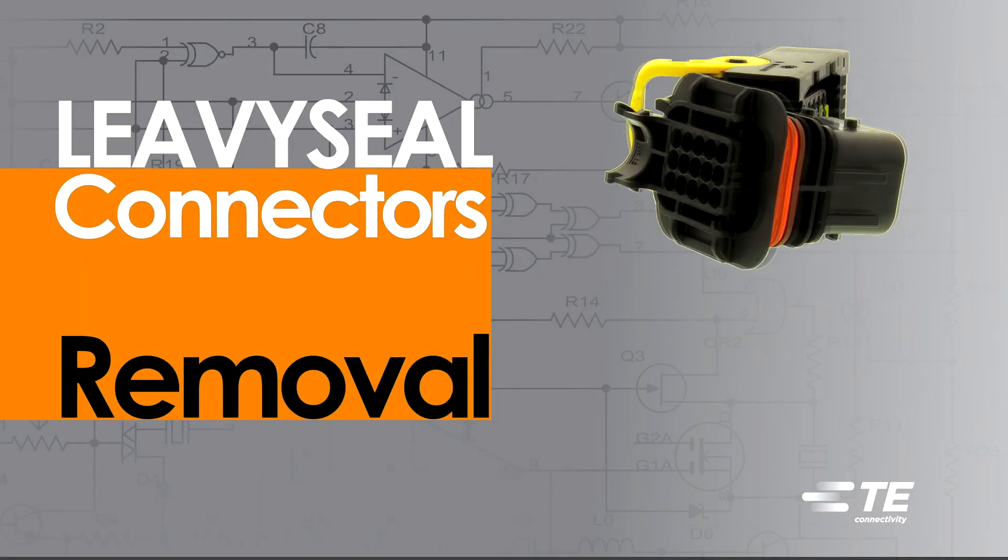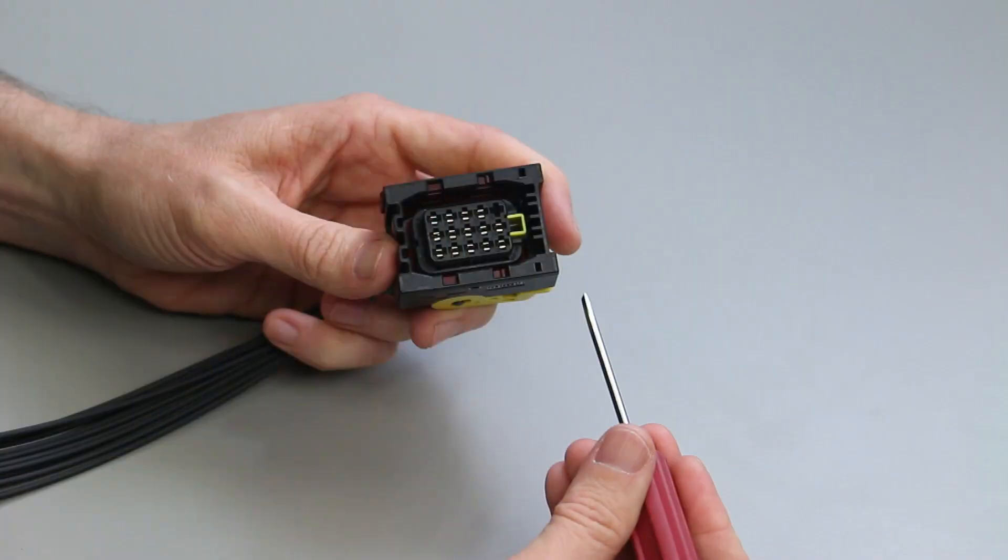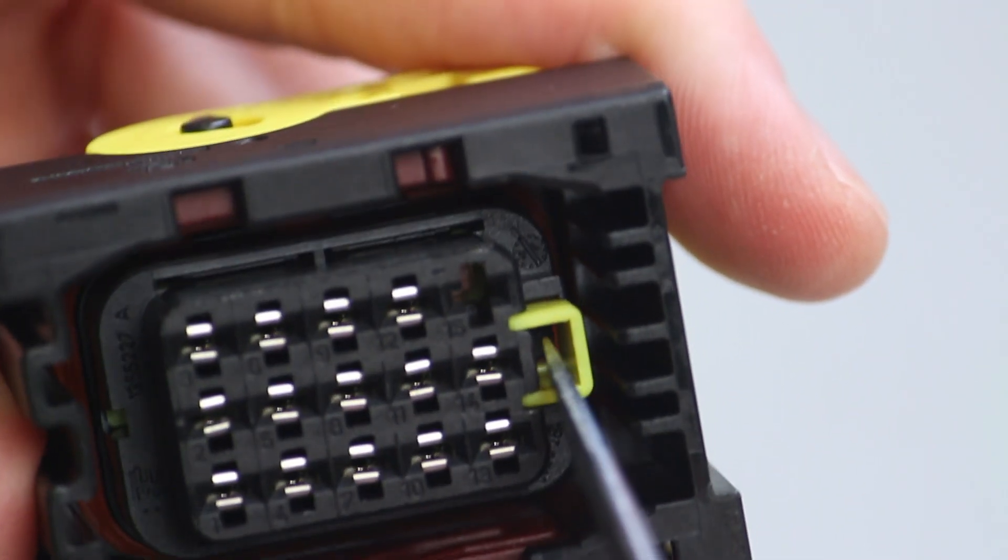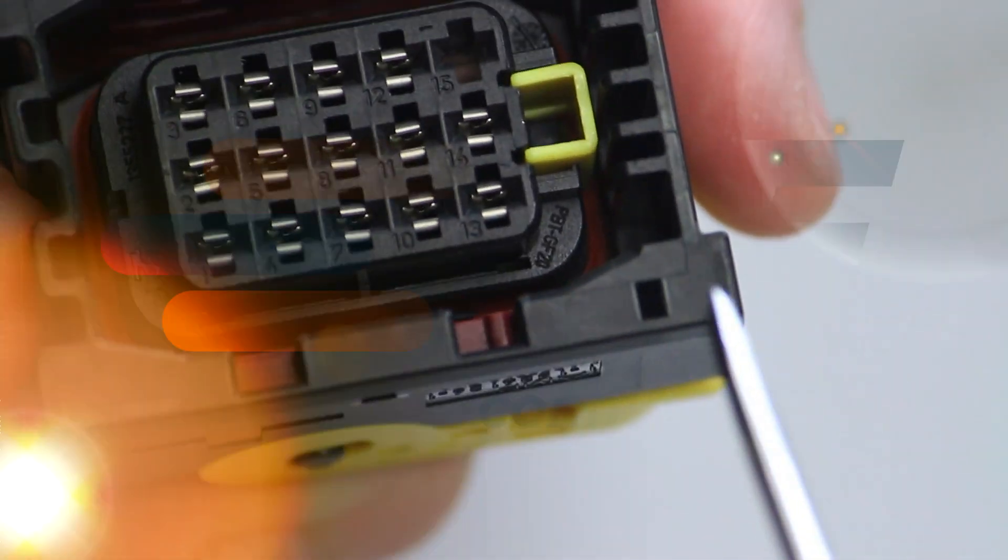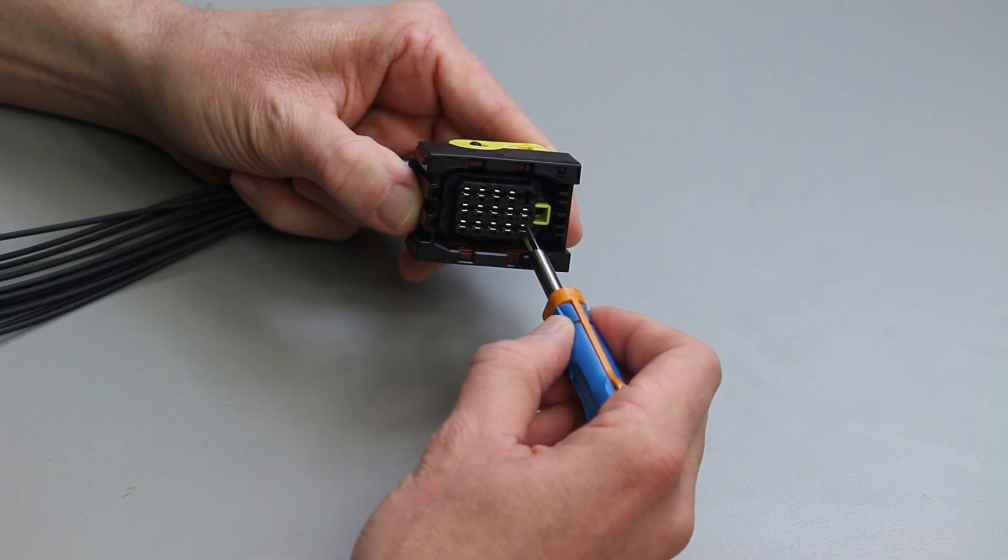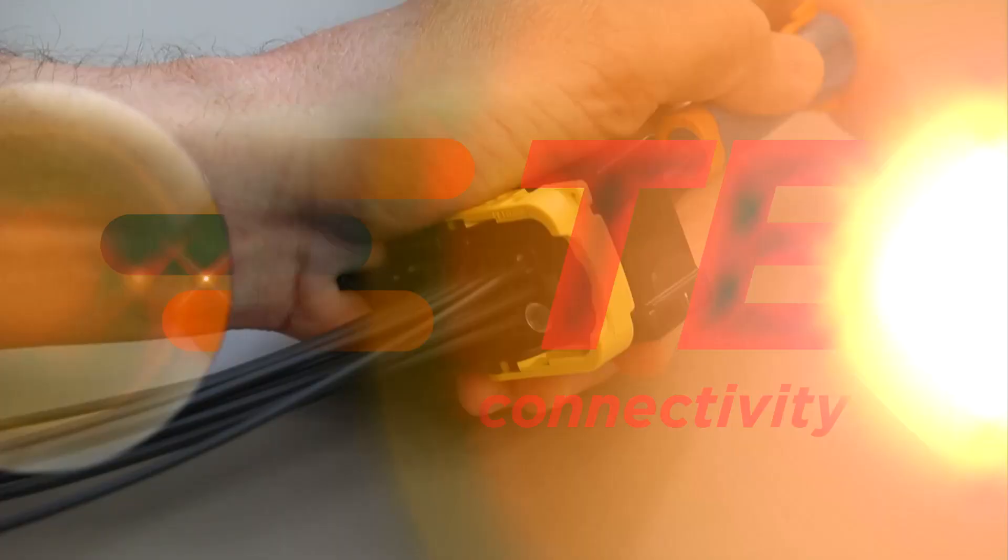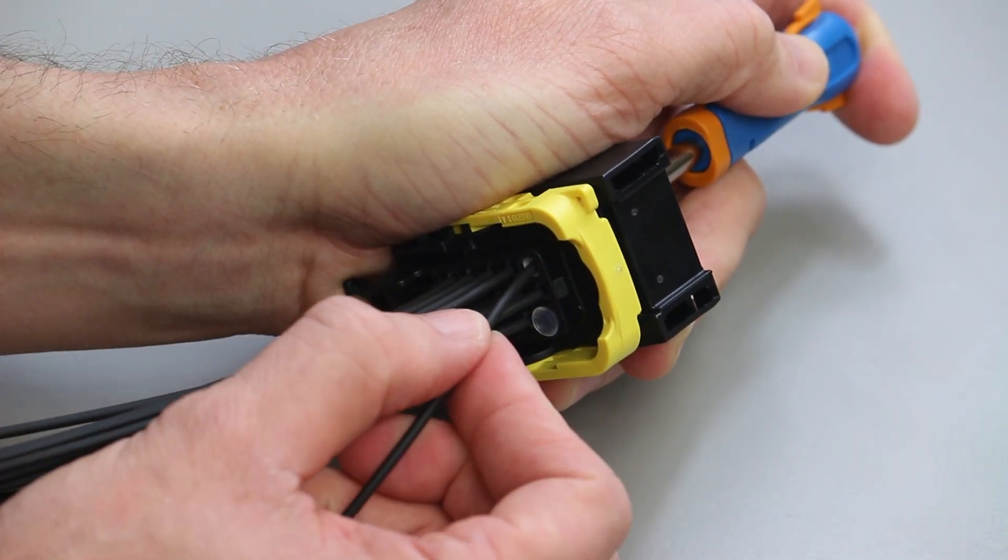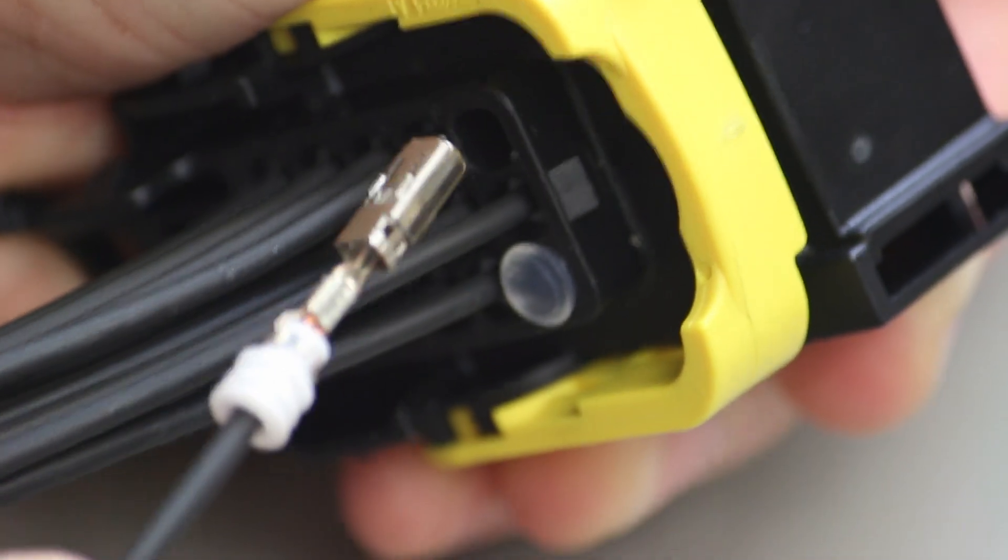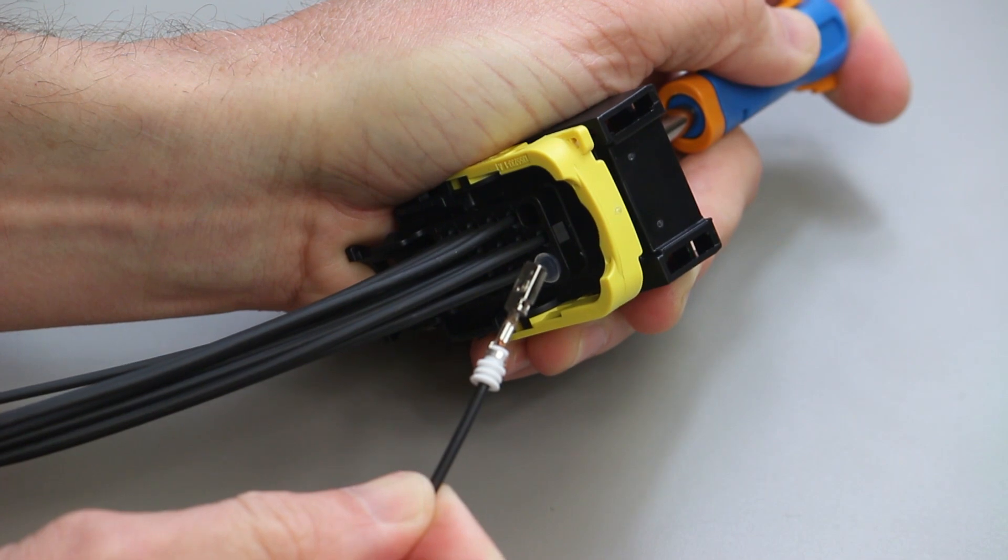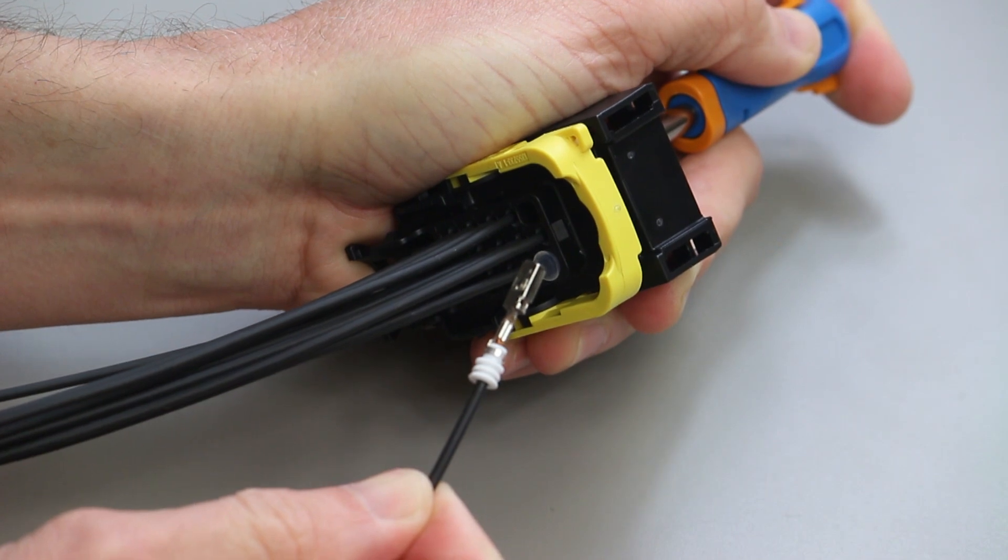Levee Seal Contact Removal. Connectors must be unmated to remove the contacts. Using a DT-RT1 or a screwdriver, slide the integrated secondary lock into the unlocked position. Using the correct removal tool, insert the tool into the contact release points while holding the tool in place. Gently pull on the wire until the contact is removed. Repeat this process until all of the contacts have been removed.